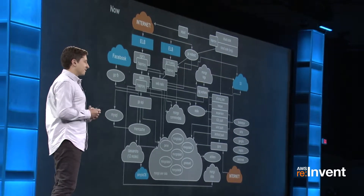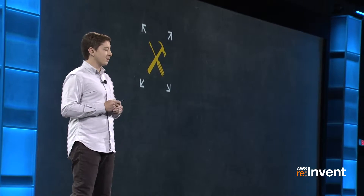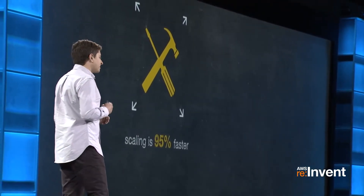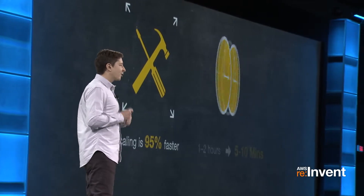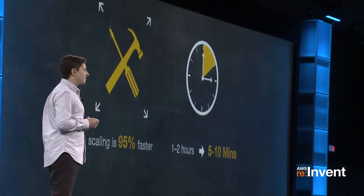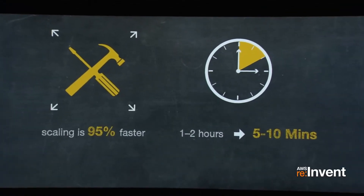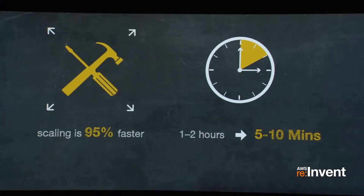We have many apps charting in the App Store on any given day, which really changes what you need to do. The traffic profile is different whether you're in the top 10, top 20, or top 50 across 180,000 apps — that's a lot of variation. These days we can scale 95% faster than when we started out. Things that took us hours now take just a few minutes, so when a great new social game is really blowing up, we can double capacity on demand.